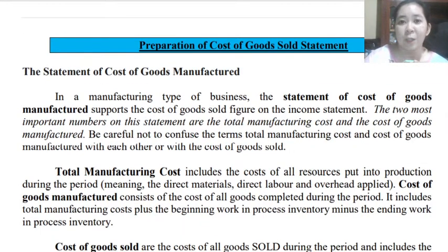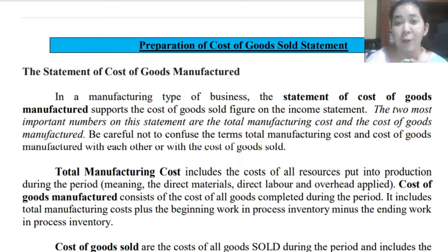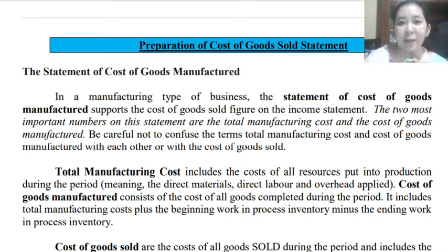In this video lecture, we will continue with the preparation of the cost of goods sold statement. In preparing the cost of goods sold, there are different sections. First, we will discuss the statement of cost of goods manufactured as part of the cost of goods sold statement. Before going to the cost of goods sold, we have to go through cost of goods manufactured first. In a manufacturing type of business, the purpose of this statement is to support our cost of goods sold figure on the income statement.